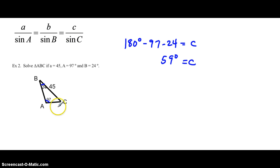Go ahead and pause the video and set that up yourself. Okay, my first step was to solve for C. We know that all three angles must add up to 180 degrees. So if I take 180 degrees and subtract 97 and 24, we will find how many degrees angle C has. And it is 59 degrees.